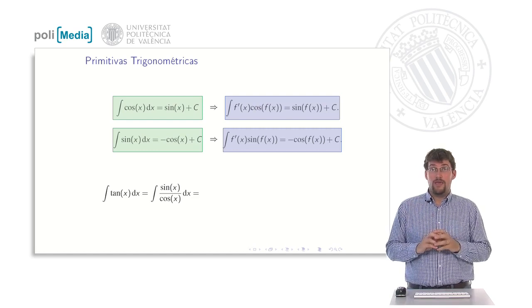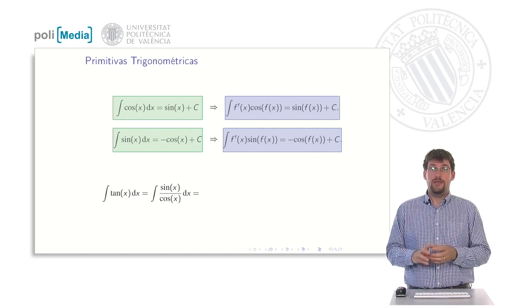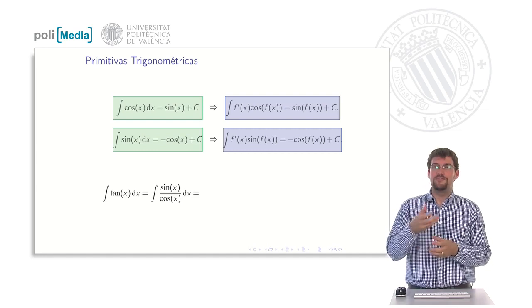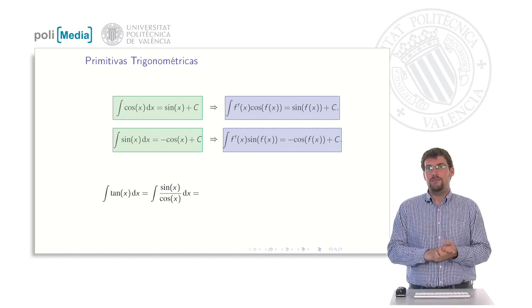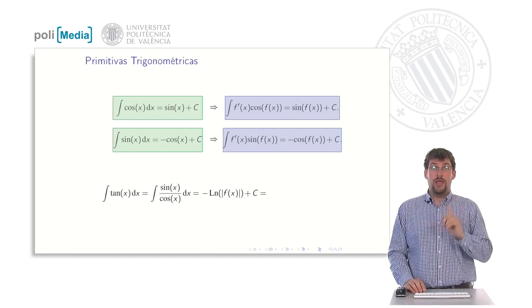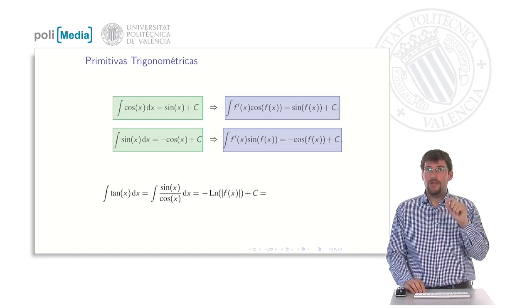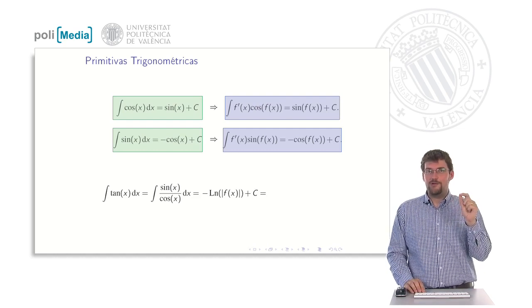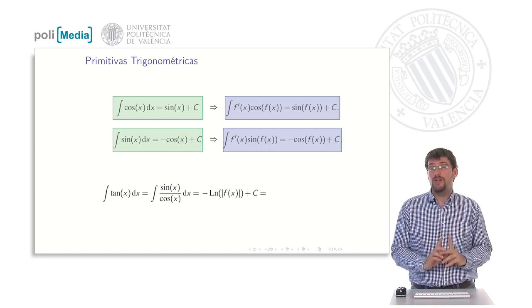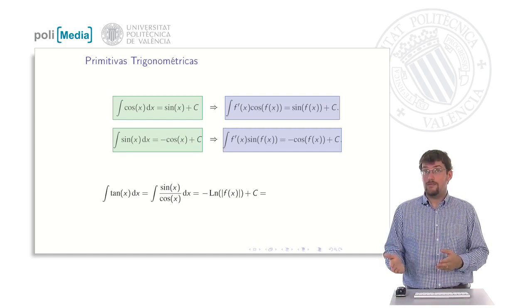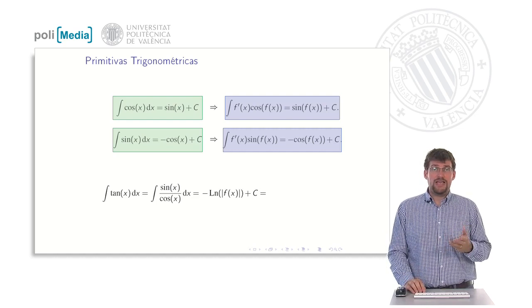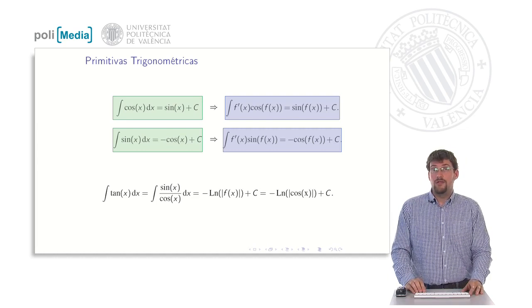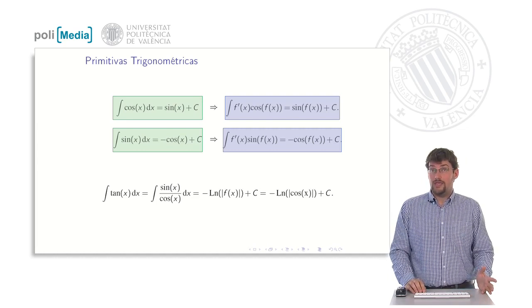Therefore, what I have now is simply a logarithmic integral in which the function is below and the derivative above. And this kind of primitive is what we would call a natural logarithm. Let's continue now with the minus natural logarithm. The minus is what is obtained by adding and removing the sign. And then the natural logarithm of the absolute value of the function plus the constant. In this case, the function was the denominator, which happens to be the cosine. Therefore, the minus natural logarithm of the absolute value of the cosine of x.